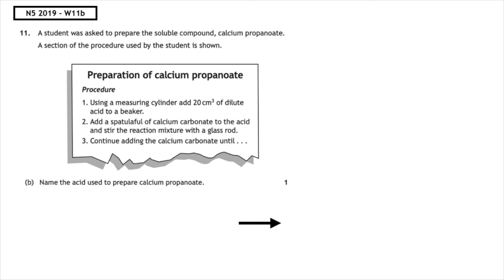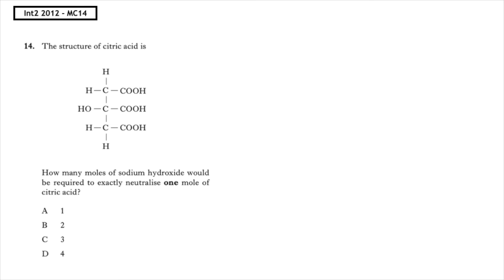This past paper question is from the National 5 2019, written 11b: Name the acid used to prepare calcium propanoate. Remember, the second part of the name comes from the acid, so we're looking at the propanoate. We take off the 'oate' and change it to 'oic acid', so the name of the acid was propanoic acid.